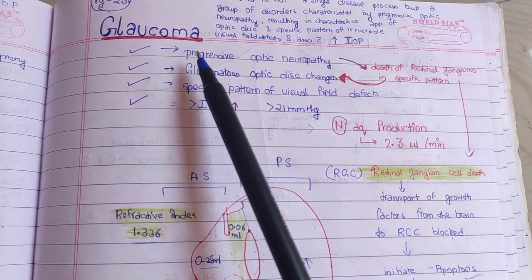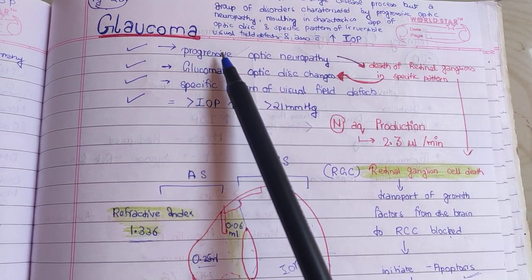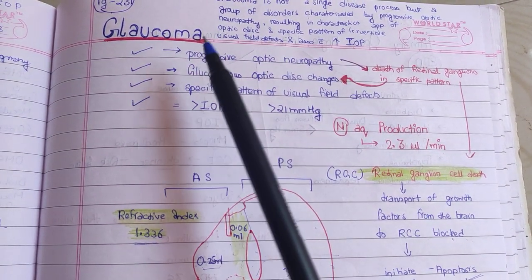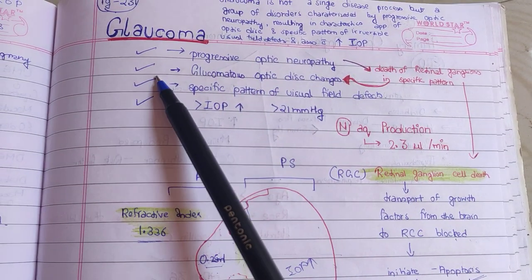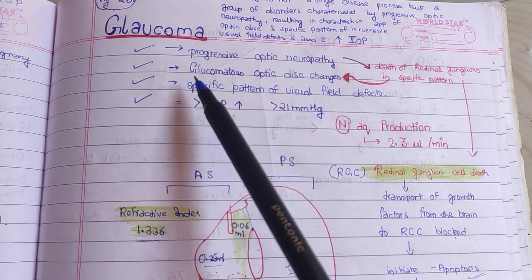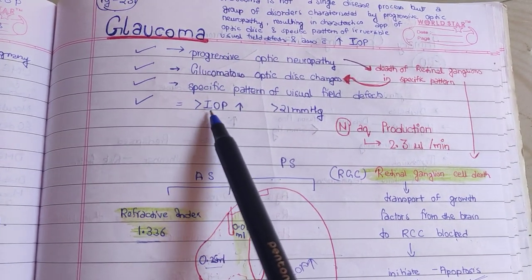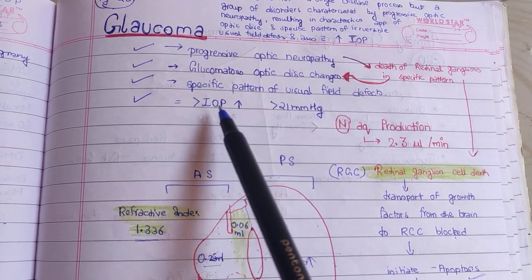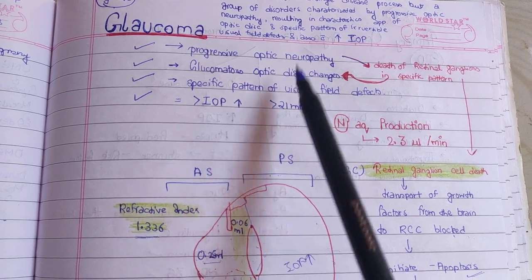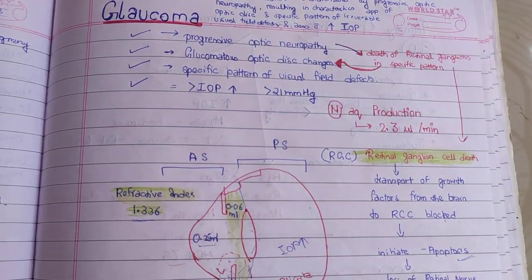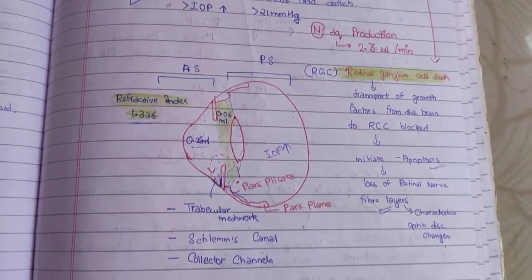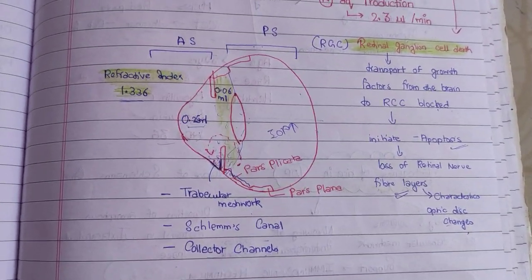The topic for today's discussion is glaucoma, and the reference is A.K. Khurana. We all know that there is an increase in intraocular pressure in glaucoma. So how does it occur? How does IOP increase?